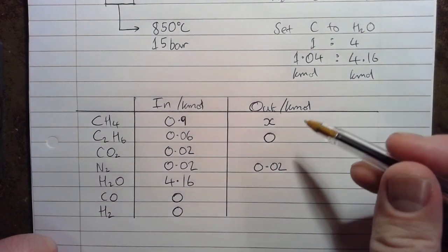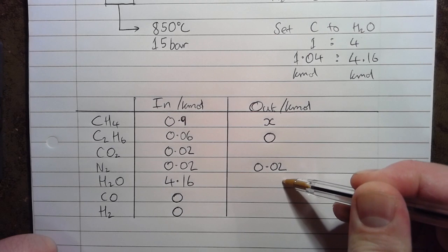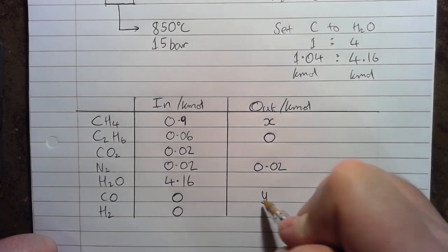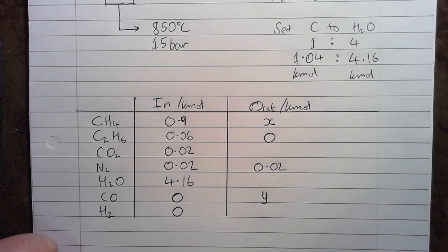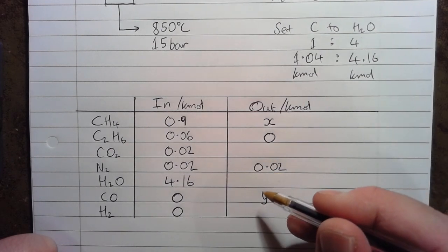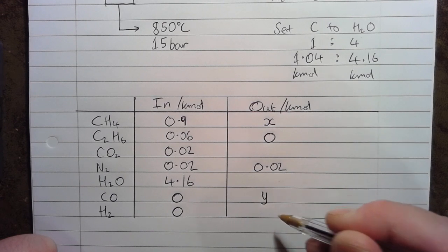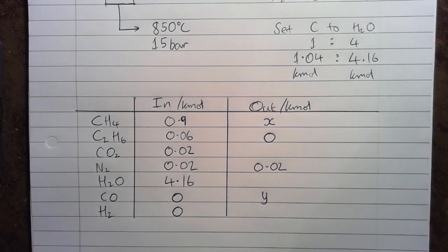The H2O, we're going to solve by an elemental balance using oxygen. The CO, we're going to set that as Y, another variable that we need to solve for. And then finally, the H2, we're going to do a hydrogen balance over the system to work out what's coming out in terms of H2.